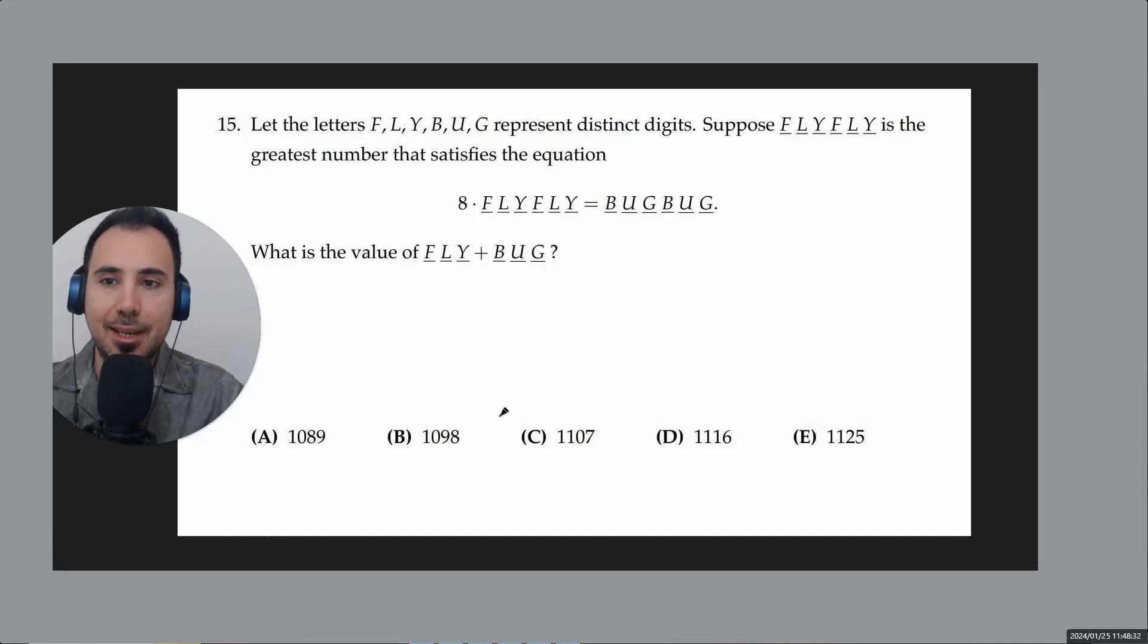Problem 15. Let's first read it. Let the letters F, L, Y, B, U, G represent distinct digits. Suppose FLY FLY is the greatest number that satisfies this equation: eight times FLY FLY is equal to BUG BUG. What is the value of FLY plus BUG? When you see this question, immediately you have to remember...